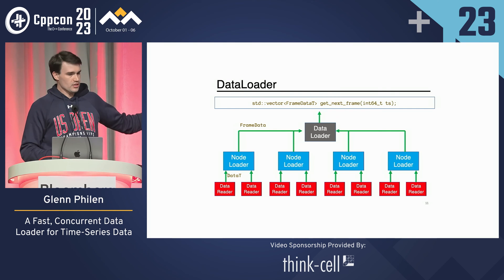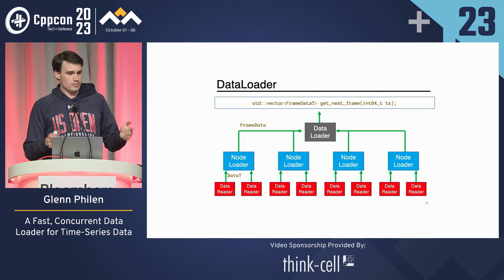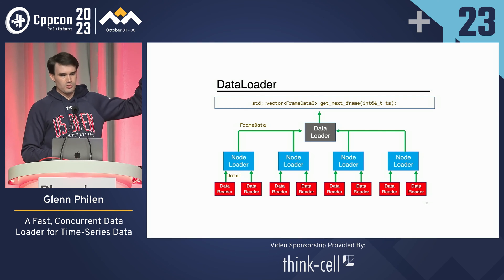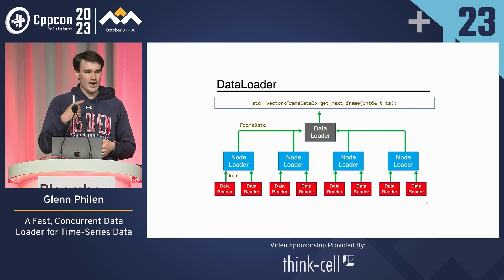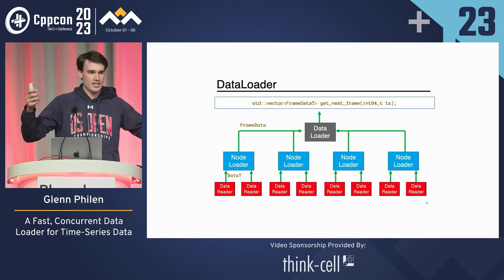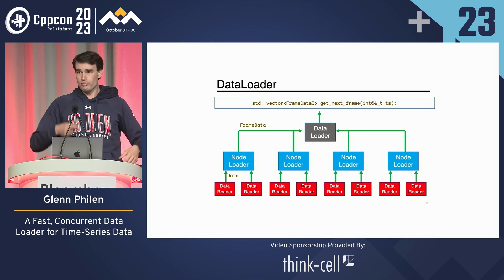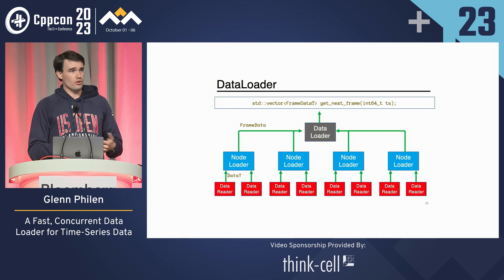Here's a tree view. You see the data readers — they're feeding data to the node loaders over a lockless queue. And then we have the node loader going up to the data loader. When you ask for the next frame, the data loader will go and pull off all of those queues the next frame of information for all of your different data types.